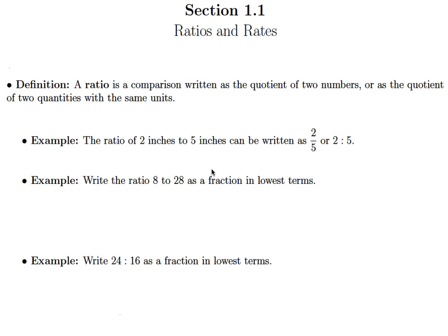So first of all, the definition of a ratio is that it's just a comparison written as the quotient of two numbers or as the quotient of two quantities with the same units. So you're comparing two things when you're looking at a ratio.